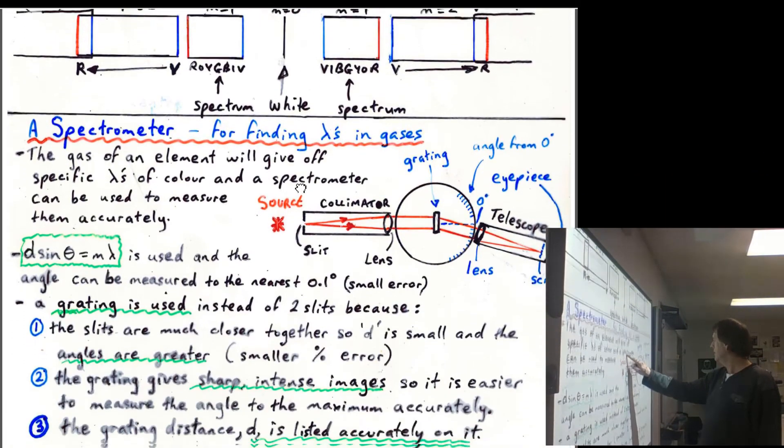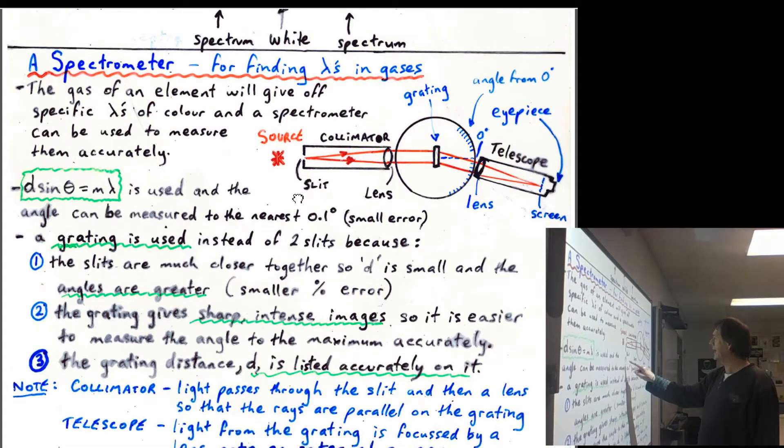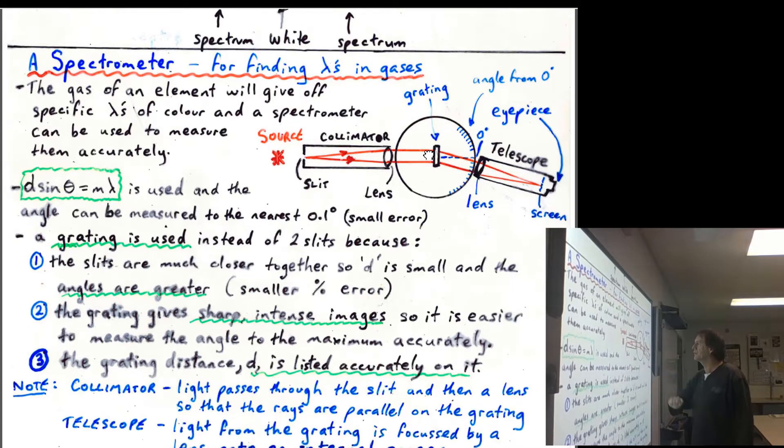Now the spectrometer could be used to measure wavelengths. What happens is you put a light source there, monochromatic usually, it goes through a single slit. That actually causes diffraction, you get the light spreading to this lens here and that will send it through here parallel as rays to the diffraction grating.